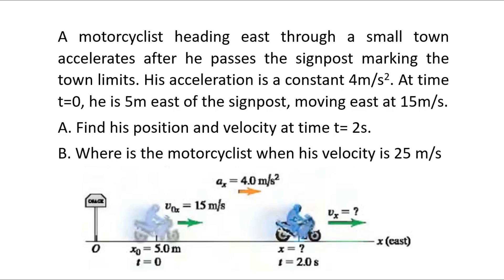A motorcyclist heading east through a small town accelerates after he passes the signpost marking the town limits. His acceleration is a constant 4 m per second squared. At time t equals 0, he is 5 m east of the signpost, moving east at 15 m per second. We need to find his position and velocity at t equals 2 seconds, and where he is when his velocity is 25 m per second.